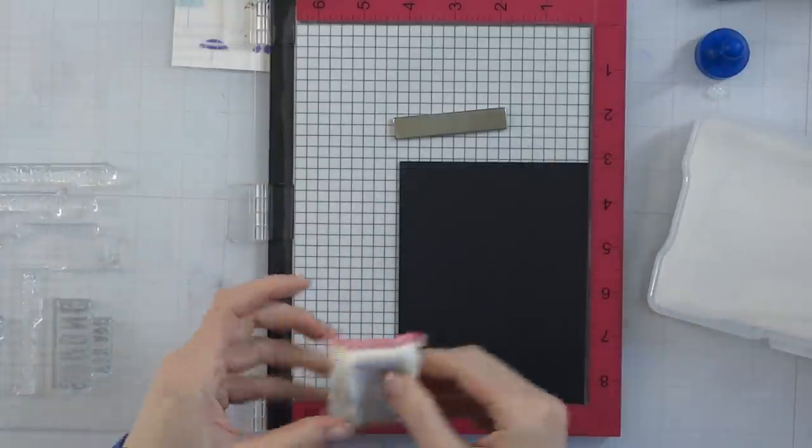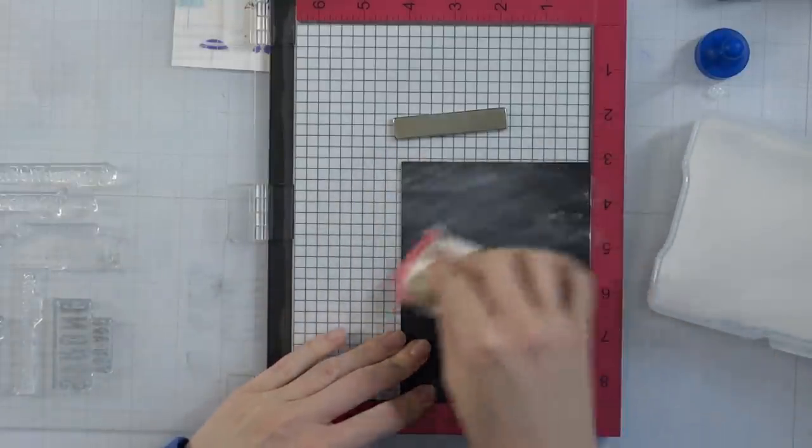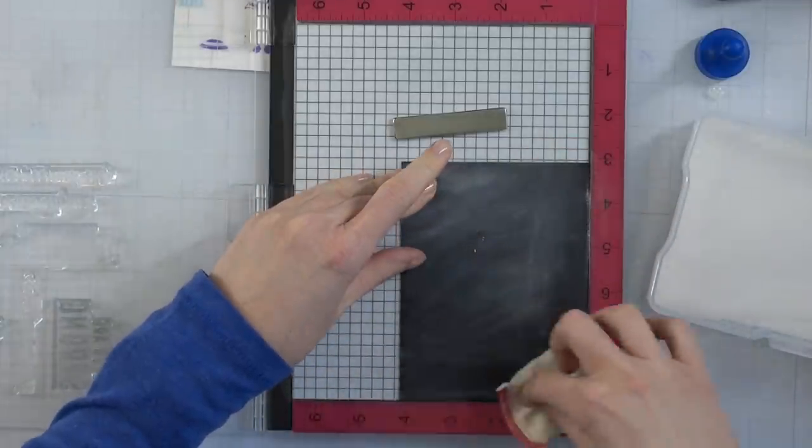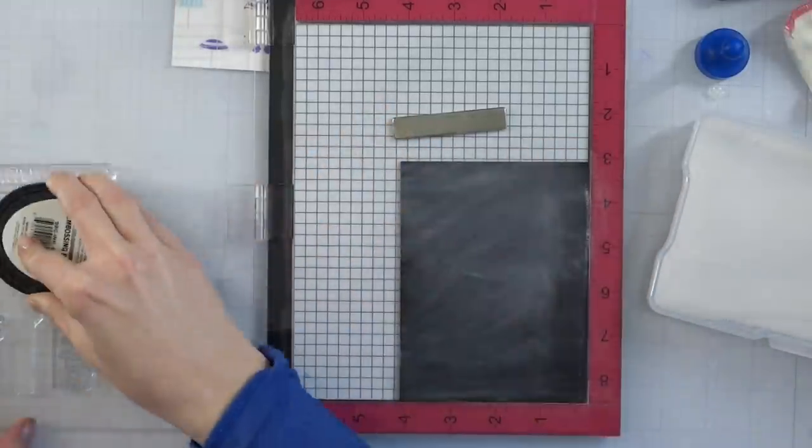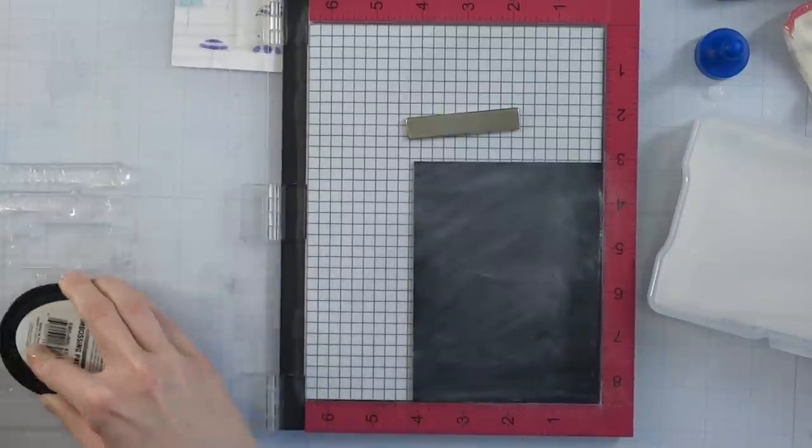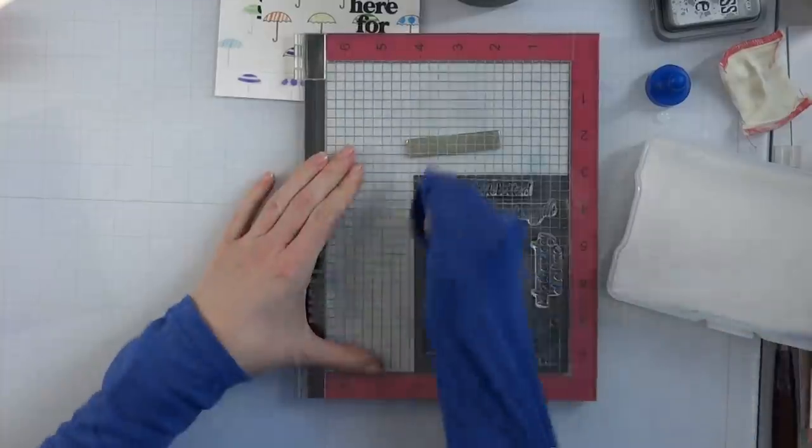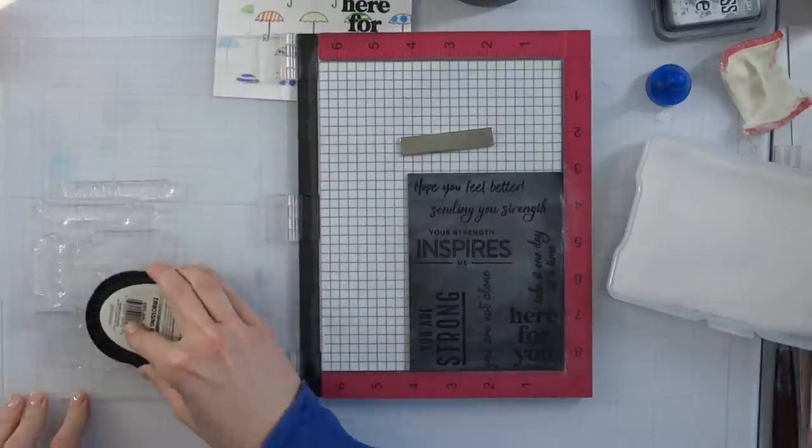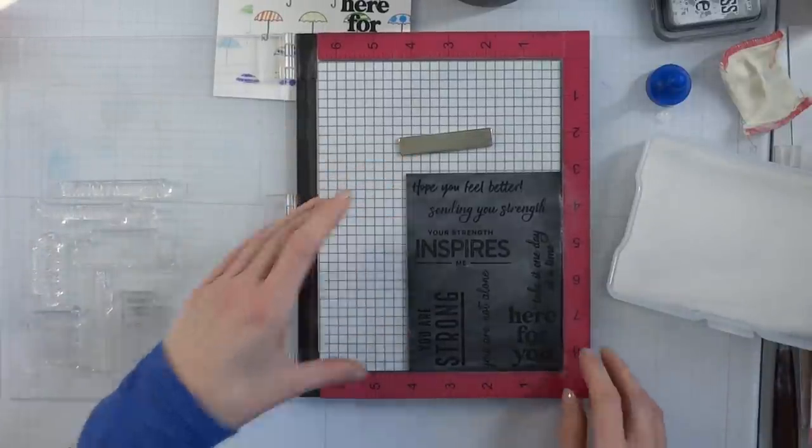This is a tip I highly recommend for anyone: take your sentiments that you're using and just pick a sentiment grouping and stamp them all at once and heat emboss them all at once. It's going to save you tons of time. I sat here at my craft desk and made like 10 cards and it was just so much easier to do this.